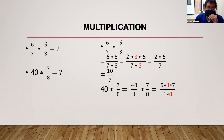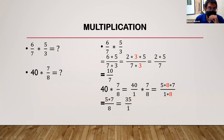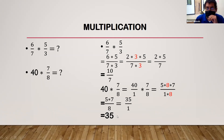For 40 times seven-eighths: write 40 as a fraction — 40 over 1. Multiply: 40 times 7 over 1 times 8. Break 40 into 5 times 8, then cancel the eights. We're left with 5 times 7 over 1, which is 35 over 1, so the answer is 35.